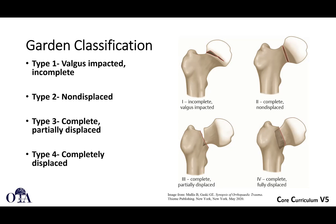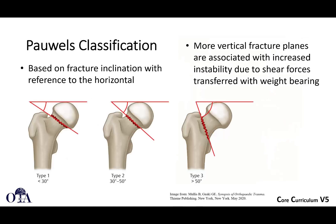Garden classification is also fairly universally utilized. Type 1 is the valgus-impacted incomplete fracture. Type 2 is the non-displaced fracture. These are perhaps a little more stable, certainly the Type 1. Types 3 and 4 really mean displaced — Type 3 is complete but only partially displaced versus fully displaced Type 4. We usually just ask: is it a 3 or 4? Is it displaced? That's what drives decision-making.